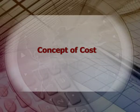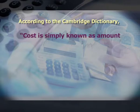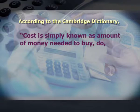Now let us understand the concept of cost. The concept of cost has been introduced since the barter system. If someone wants something, he or she has to give something; whatever was given up in exchange is simply the cost of whatever they have received. But after the barter system, the term cost has been expressed in monetary terms. According to the Cambridge dictionary, cost is simply known as the amount of money needed to buy, do, or make something.